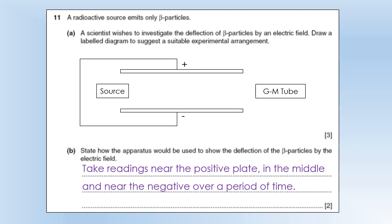So we take a reading near the positive plate, in the middle, and near to the negative, and those measurements, you should see that count rate is higher at one of them indicating deflection.